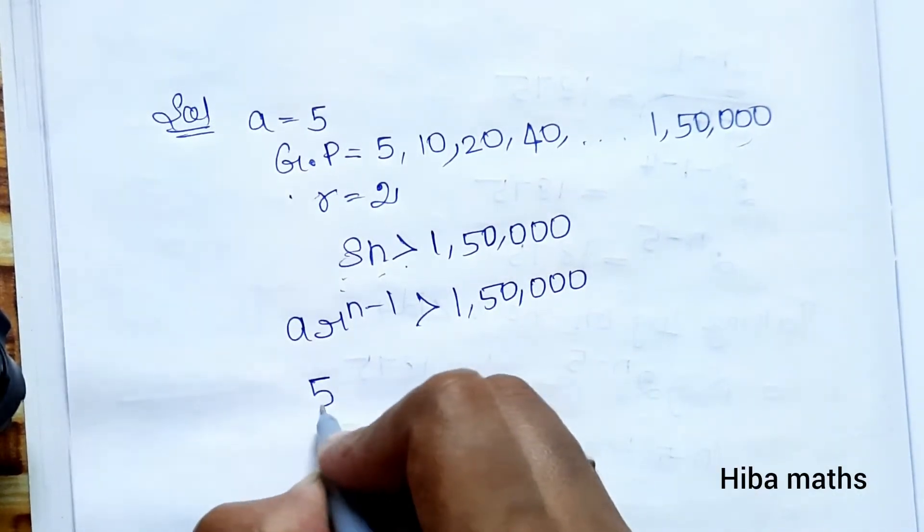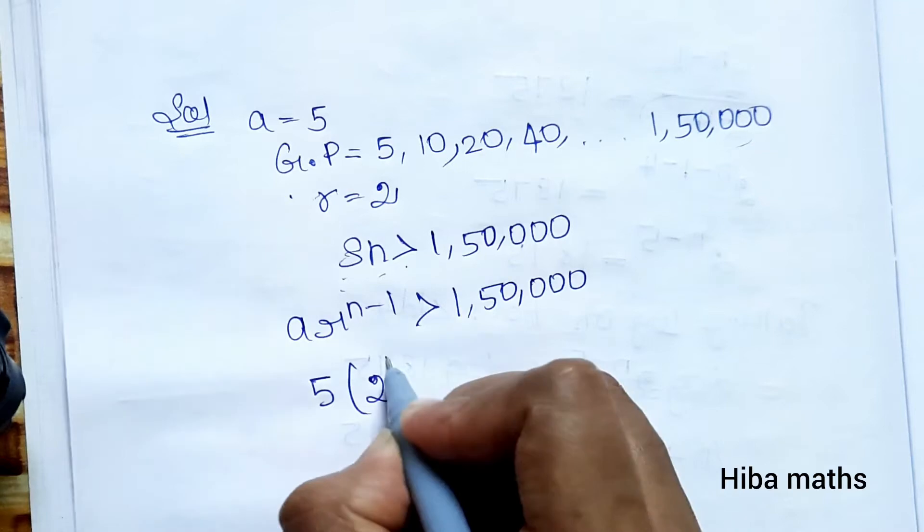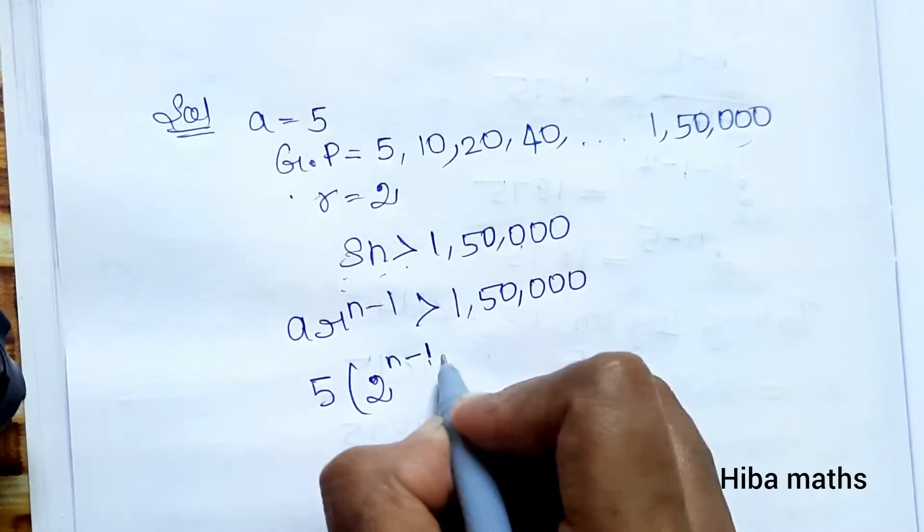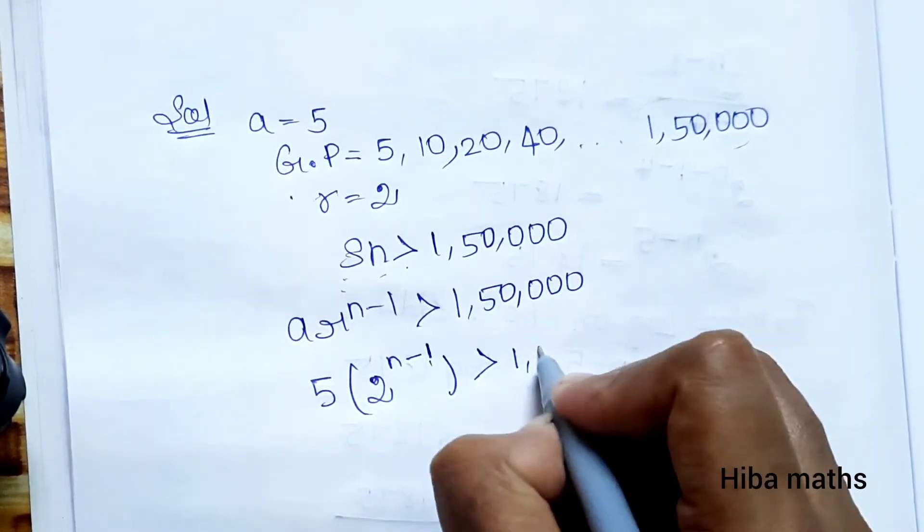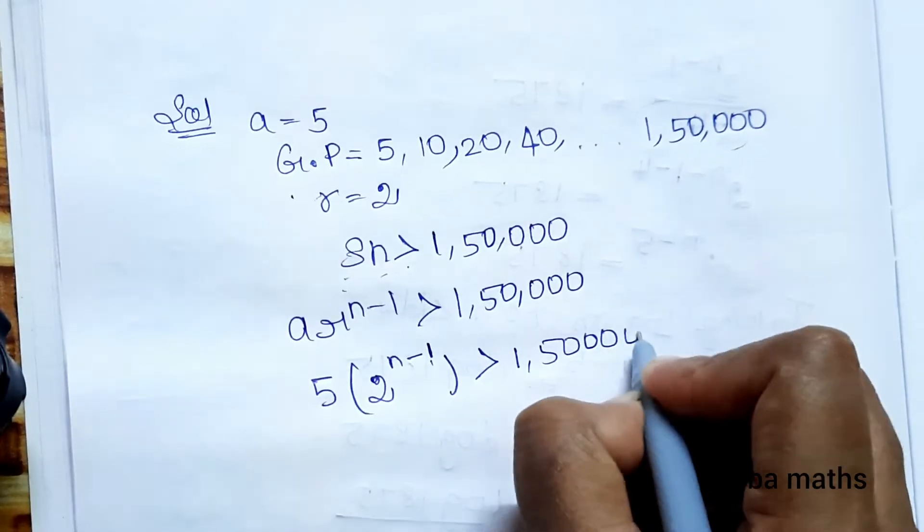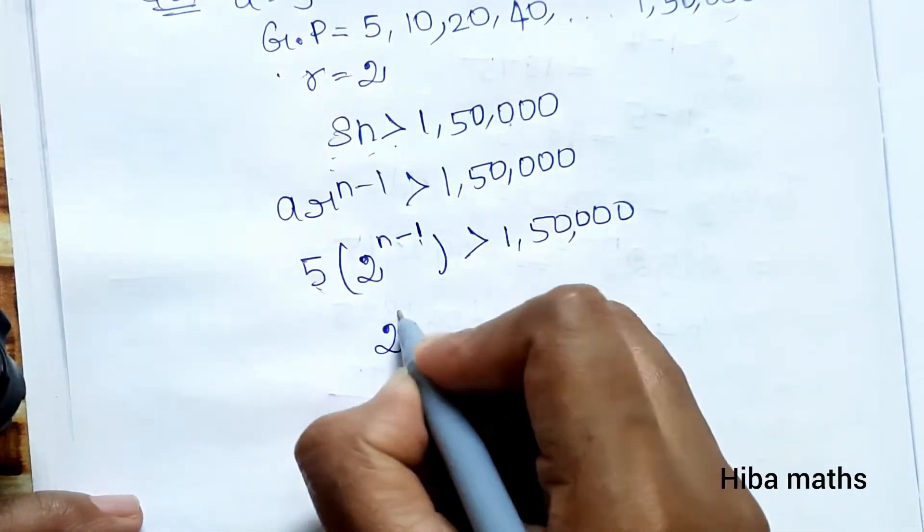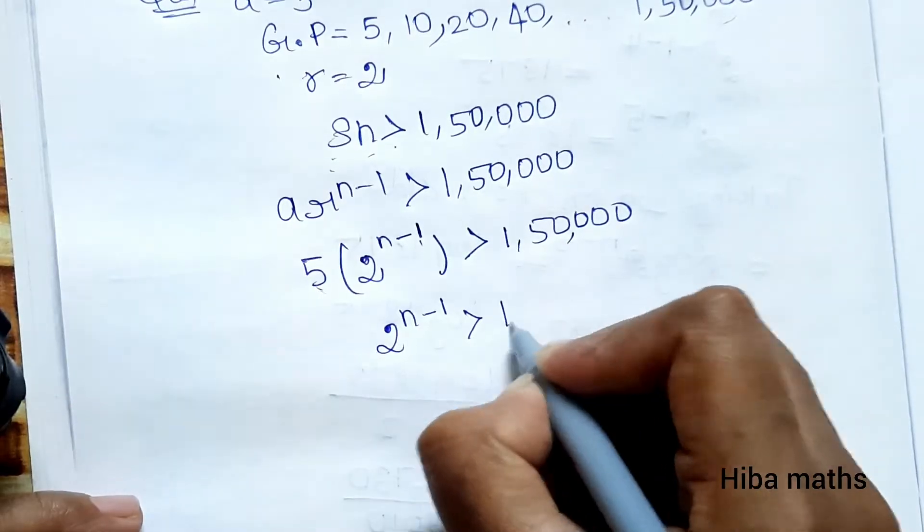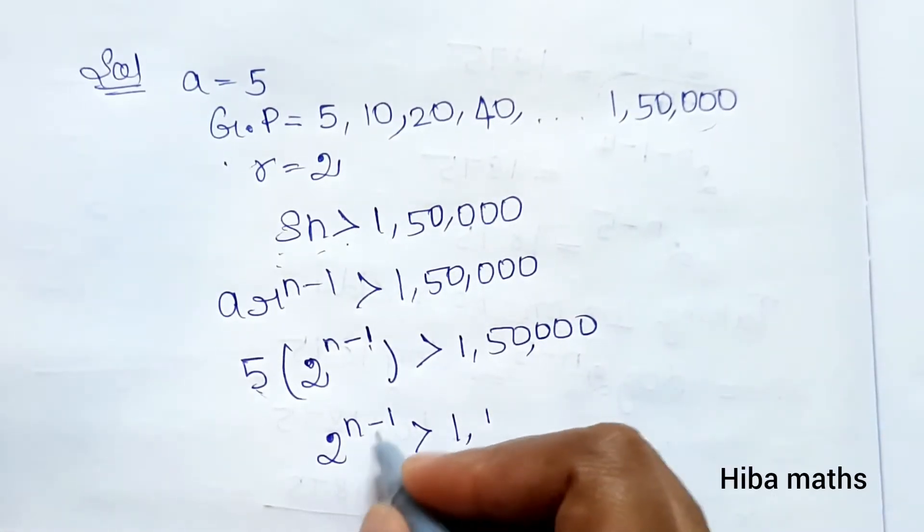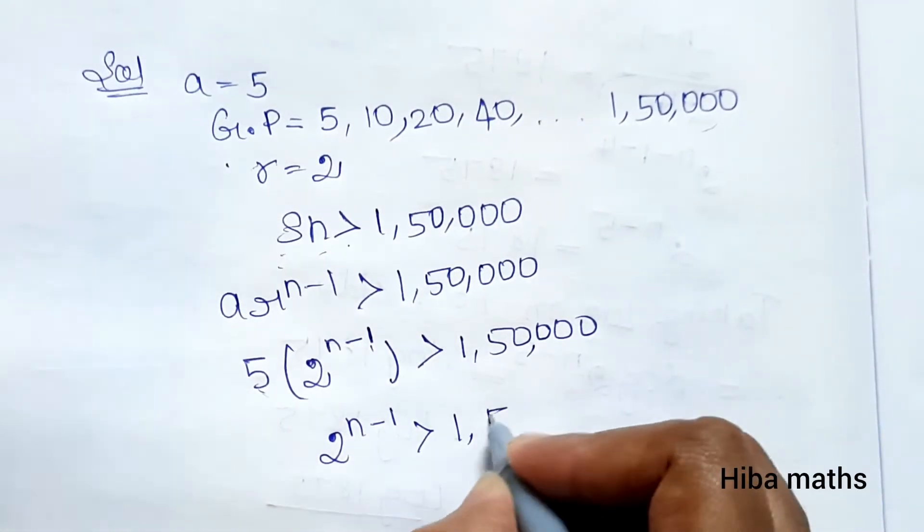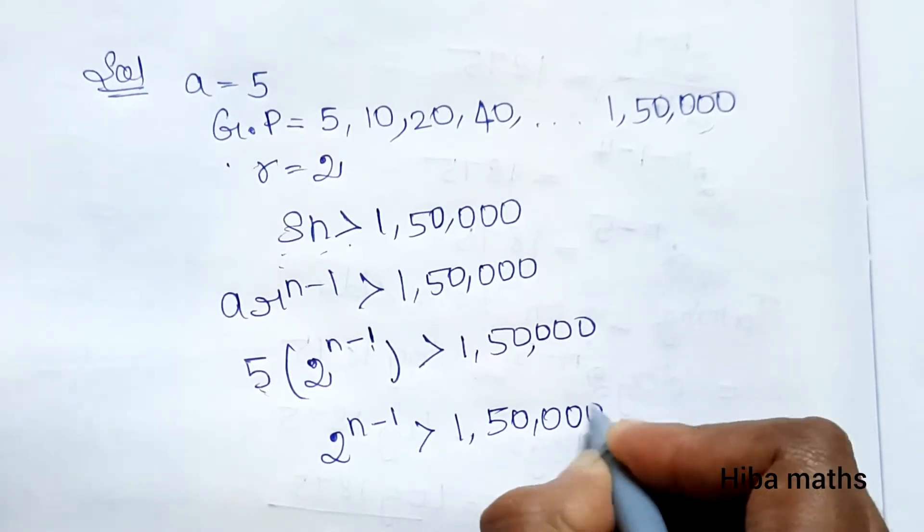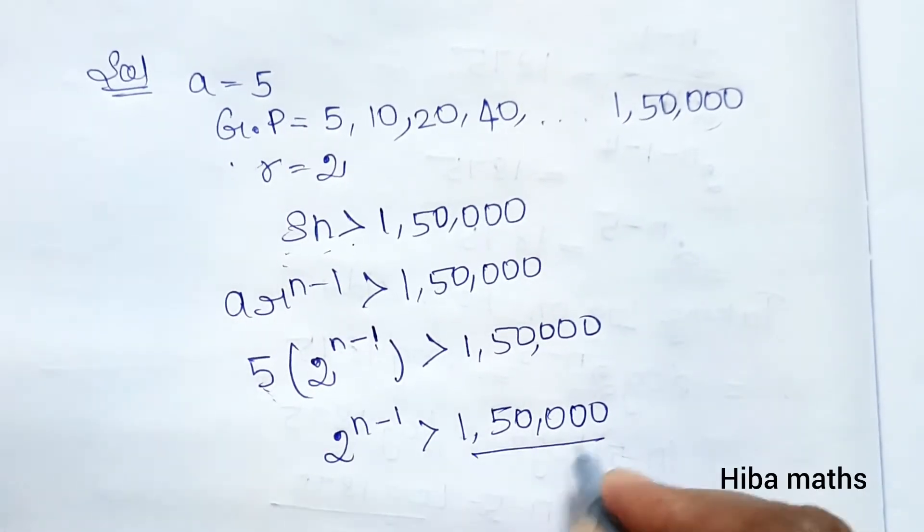With a = 5, we have 5 times 2 power n-1 is greater than 150,000. Dividing by 5 on both sides: